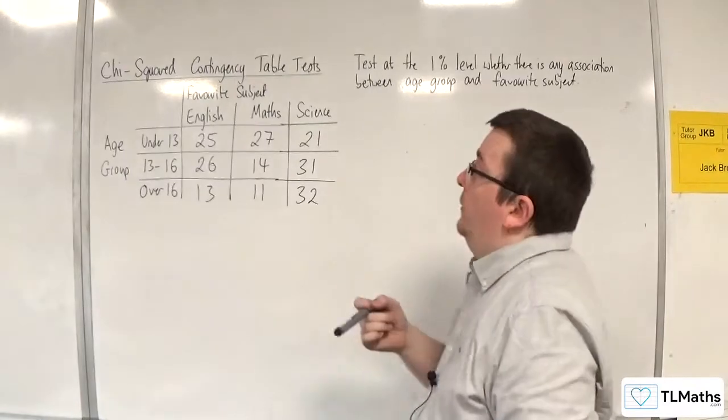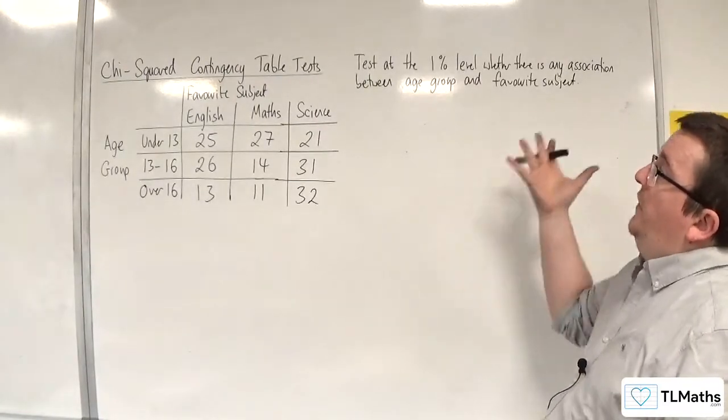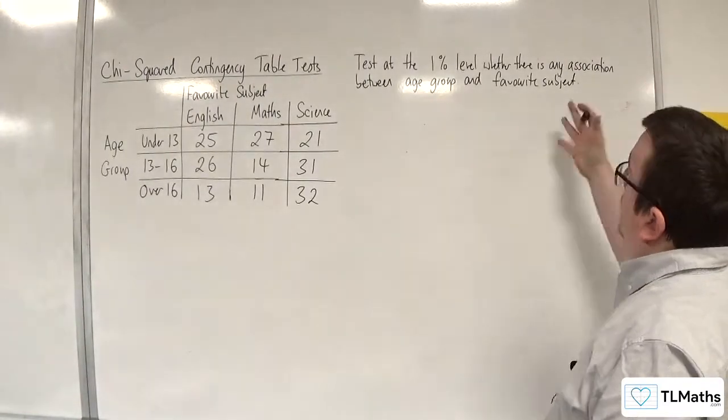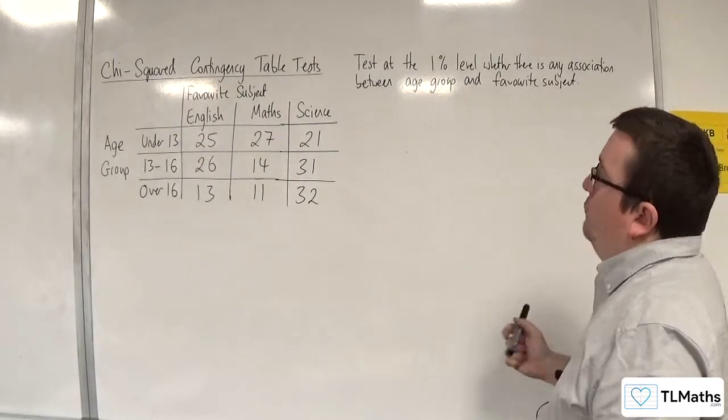In this video we're going to go through another example, but this time we're going to test at the 1% level whether there was any association between age group and favourite subject.